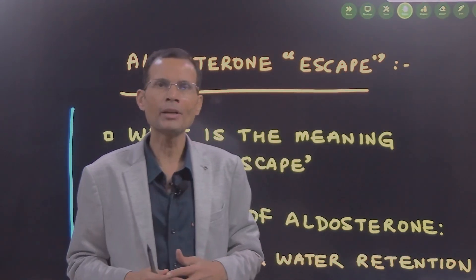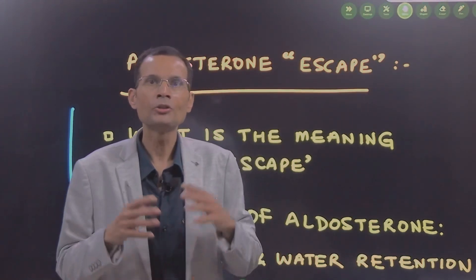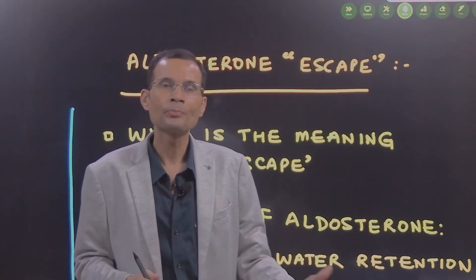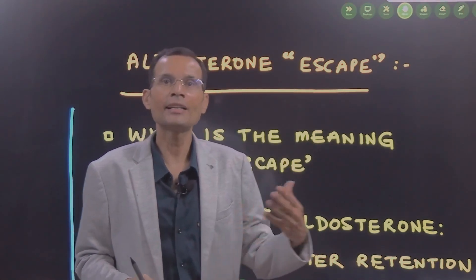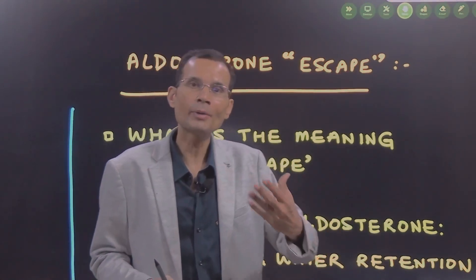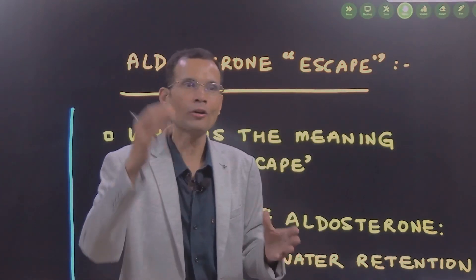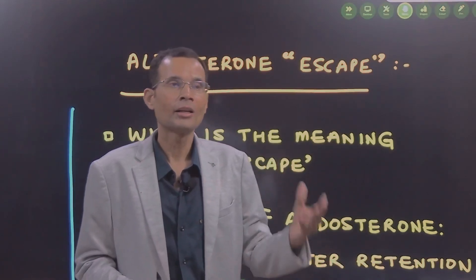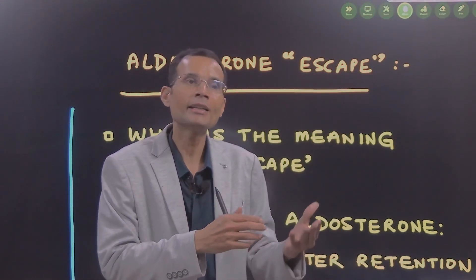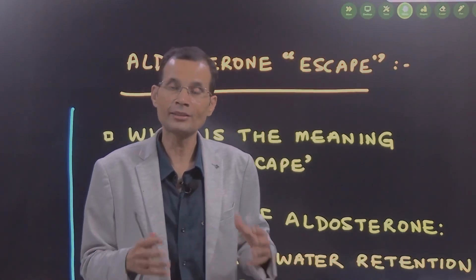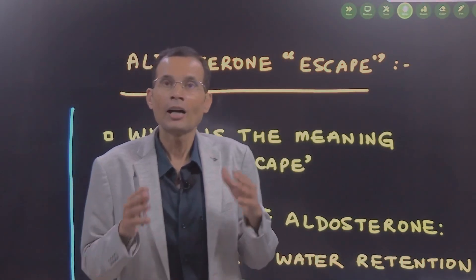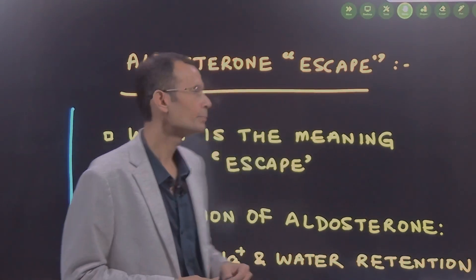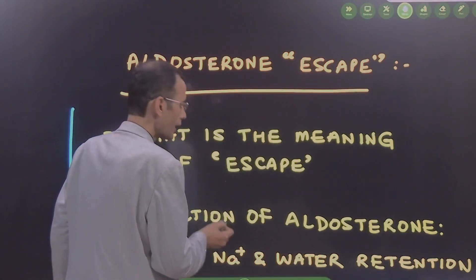Is the vagus escaping? Is the aldosterone escaping? No. They are exerting their effects on some organ system and that effect is initially seen, and later on the organ system escapes the effect of that regulator. Vagal escape would mean that the heart initially shows the effect of vagus, but then it escapes that effect. Now, coming to the aldosterone escape, what is the meaning of aldosterone escape?